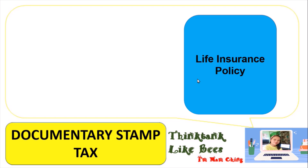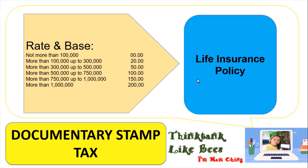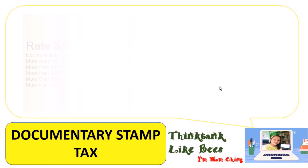For life insurance policies, the rate and base is as follows: if the insurance policy is not more than 100,000 pesos, the documentary stamp tax is zero — you need not pay any. If it is more than 100,000 up to 300,000, you pay 20 pesos. If it is more than 300,000 up to 500,000, you pay 50 pesos. If it is 500,000 up to 750,000, you pay 100 pesos. If it is more than 750,000 up to 1,000,000, you pay 150 pesos. If it is more than 1,000,000, you pay 200 pesos.